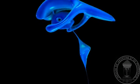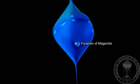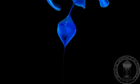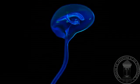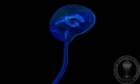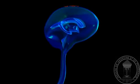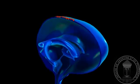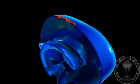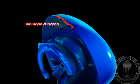The CSF will leave the fourth ventricle through the foramen of Magendie to fill the subarachnoid space between the pia mater and the arachnoid. The CSF is then absorbed at the top of the skull by the arachnoid granulations of Pacchioni.